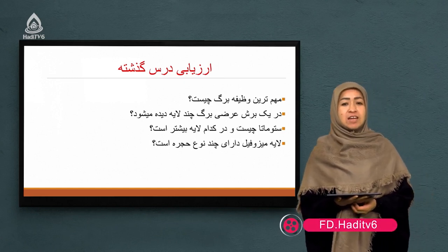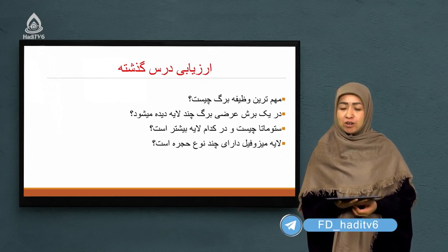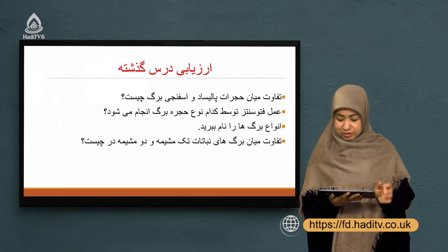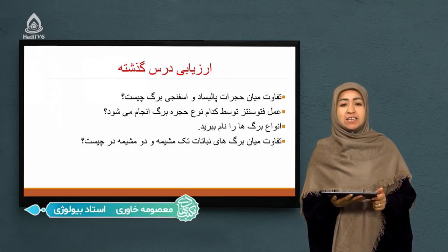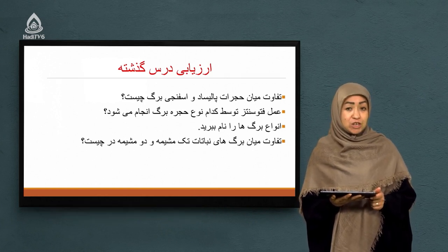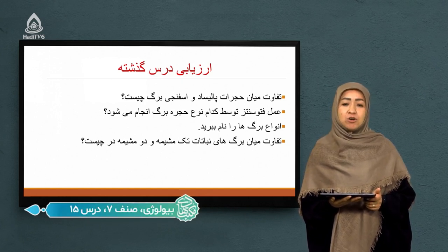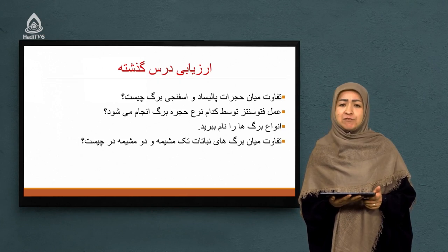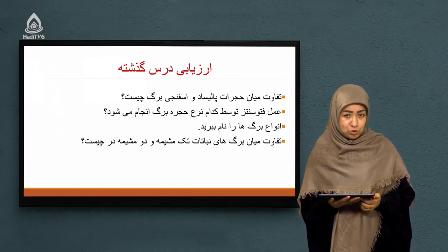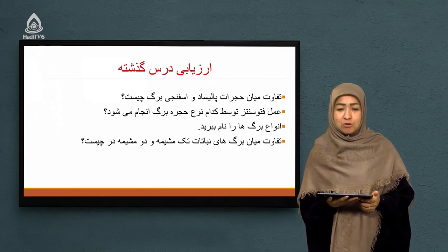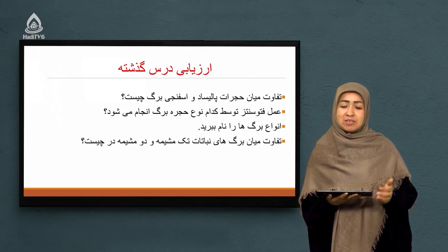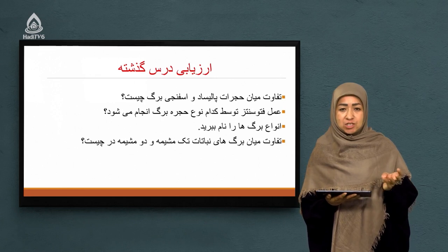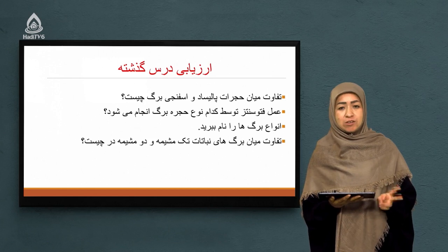سوال بعدی: لایه میزوفیل دارای چند نوع هجره است؟ در لایه میزوفیل دو نوع هجره داشتیم: هجرات پالیسات و هجرات اسفنجی. تفاوت میان هجرات پالیسات و اسفنجی برگ در چیست؟ هجرات پالیسات که به نام هجرات نردهای هم معروف است، دراز و کشیده و چفت کنار هم چسبیده‌اند و بین آنها فاصله وجود ندارد. اما هجرات اسفنجی کروی‌شکل‌تر، عمیق‌تر و با فاصله هم هستند.